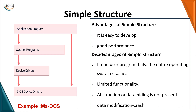Coming to the simple structure — we already know what an application program is, what system programs are, and we have device drivers which enable our input/output devices to function properly, and we have the BIOS which stands for Basic Input Output System. In a simple structure, these are the main important components of an operating system, and all these things are categorized with a link from one component to another.